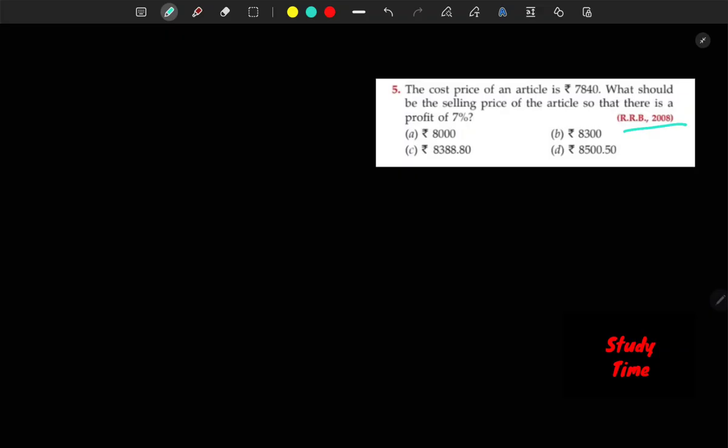Okay, how do we do this? Cost price of the article, and there is a profit of 7%. With 7% profit, the selling price equals to 107% of the cost price.